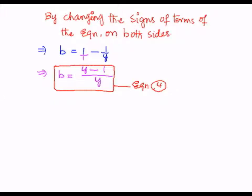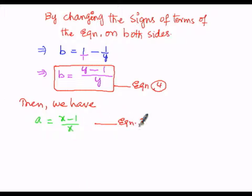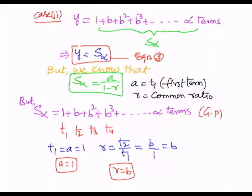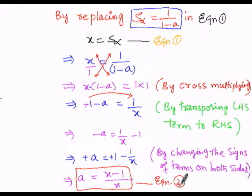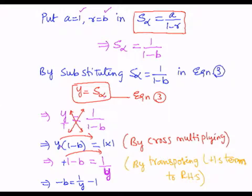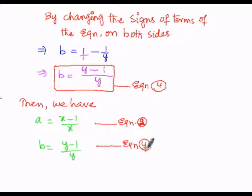Now equation number 3 and equation number 4 are established. Here, a equals x minus 1 by x is equation number 3, and b equals y minus 1 by y is equation number 4.